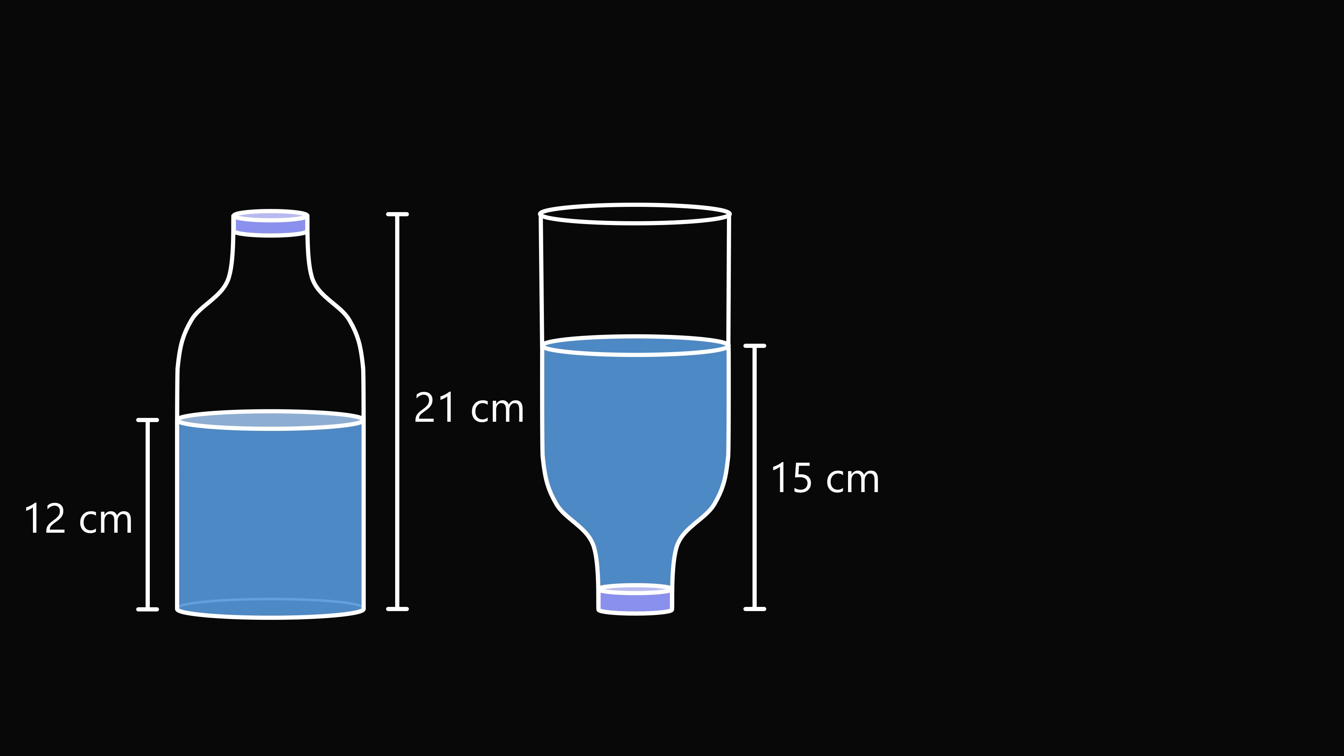The key insight to solving this problem is that the amount of air in both bottles is equal. Therefore, let's calculate the height of the air in the second bottle. Since the total bottle has a height equal to 21, the height of the air is equal to 21 minus 15, which is equal to 6 centimeters.